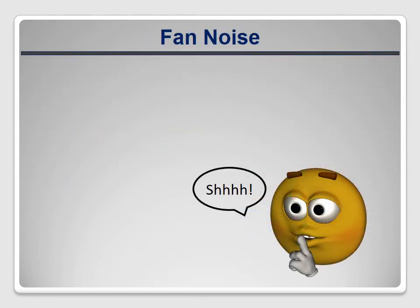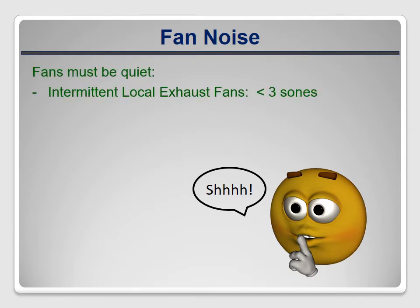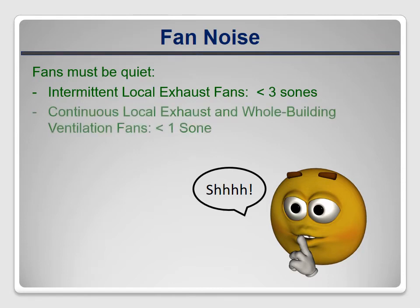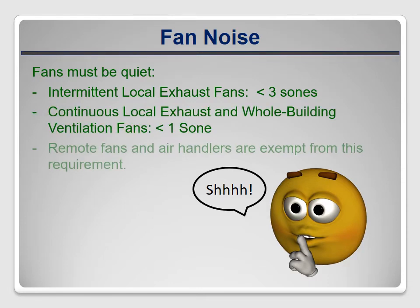The standard also requires that all fans run quietly. Intermittently operated exhaust fans must generate no more than three sones. That's not super quiet, but those fans are off most of the time. Continuously operated fans and whole building ventilation fans must be one sone or lower.